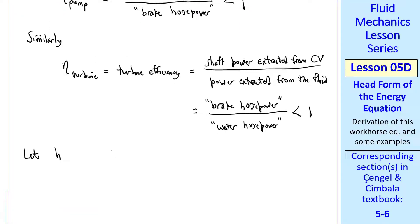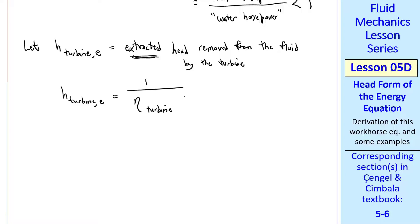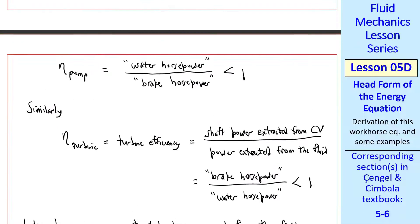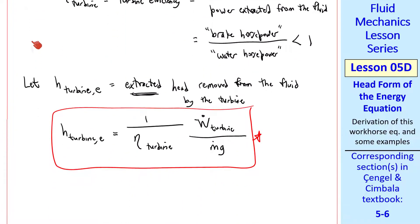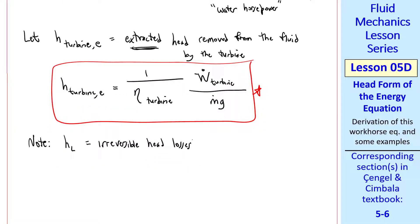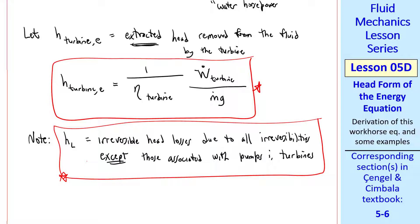Some more notation. Just as we defined H pump u, we now define H turbine e, where the e stands for the extracted head removed or extracted from the fluid by the turbine. So H turbine e is 1 over eta turbine, the turbine efficiency, times the shaft power of the turbine over m dot g. Compared to our pump, notice that eta pump is in the numerator here, but eta turbine is in the denominator here. We do that so that eta can be some number between 0 and 1. I emphasize again that H L represents the irreversible head losses due to all irreversibilities except those associated with pumps and turbines, since we treat these losses separately by using pump and turbine efficiencies.